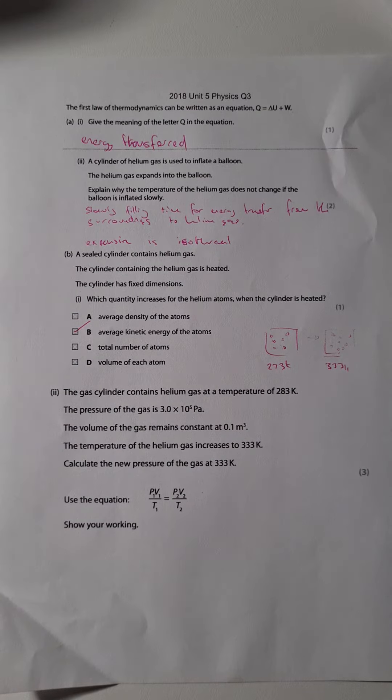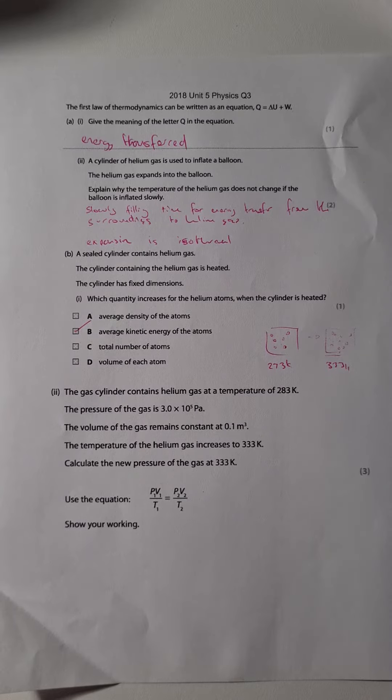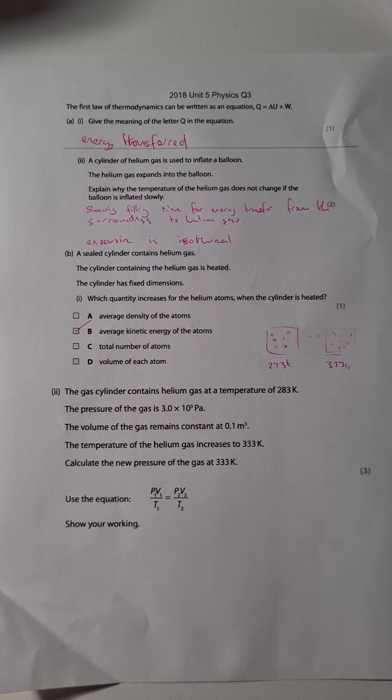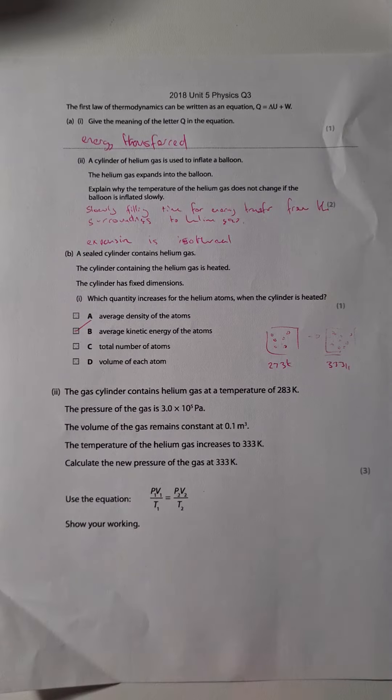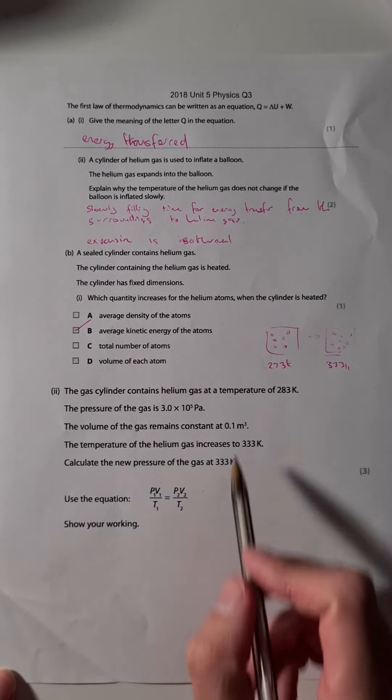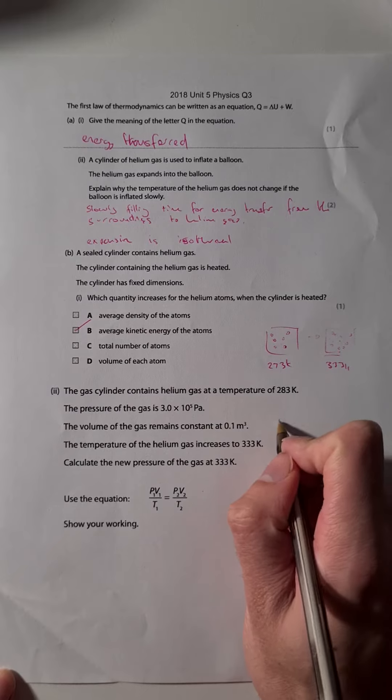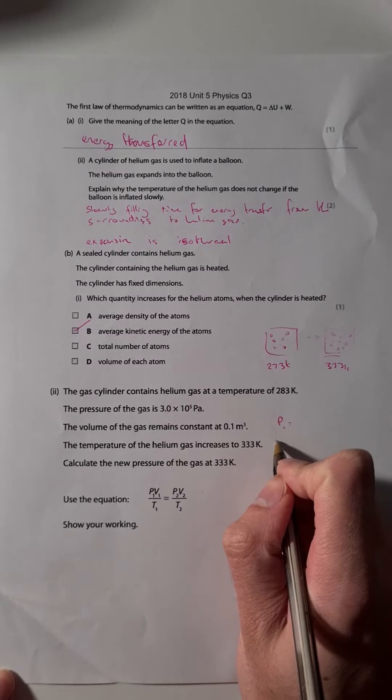Part two: The gas cylinder contains helium gas at a temperature of 283 Kelvin. The pressure of the gas is 3 times 10 to the 5 Pascals. The volume of the gas remains constant at 0.1 meters cubed. The temperature of the helium gas increases to 333 Kelvin. Calculate the new pressure of the gas at 433 Kelvin.